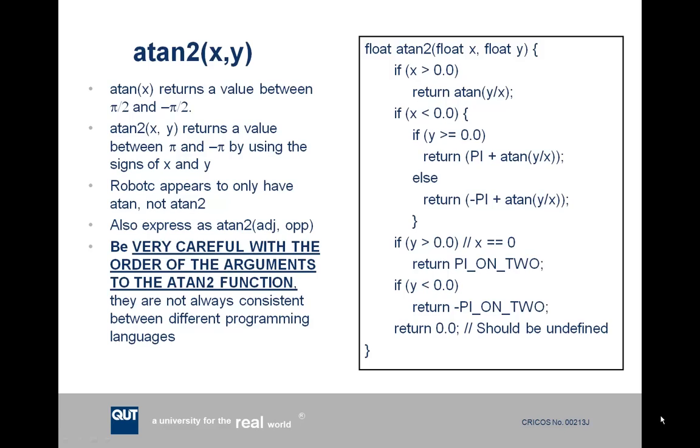On the right of this slide we've got pseudocode, actually pretty much real C code that shows you the atan2 function. It takes two function arguments, an x and a y. I'd encourage you to go through the function and see how it works. You might actually have to code this yourself because it appears that robot C doesn't have an atan2 function, it only appears to have an atan function. An atan returns a value between pi on 2 and negative pi on 2. Atan2 returns a value between pi and negative pi using a more detailed process and most importantly it works out which quadrant your angle is in, which is great.